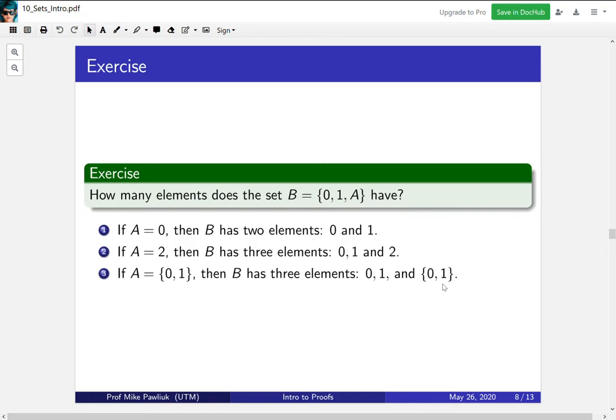Again it's helpful to think about sets as boxes that contain things. So this set B is the box that has 3 things in it: 0, 1, and A. And A itself is a box, in this case, that has 2 other things inside of it.